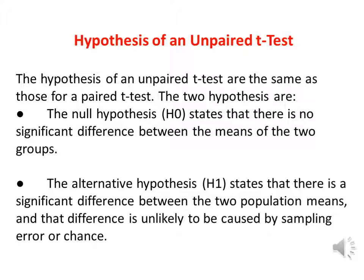The alternative hypothesis, denoted by H1, states that there is a significant difference between the two population means, and that difference is unlikely to be caused by sampling error or chance. In most cases, we are looking to reject the null hypothesis and accept the alternative hypothesis, which is that the population means are not equal — H1: mean1 ≠ mean2.